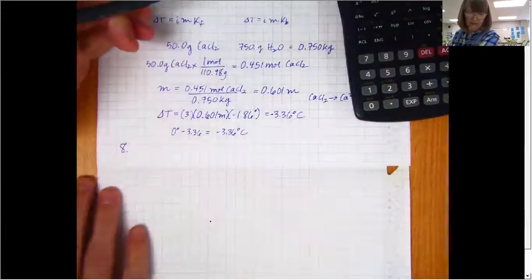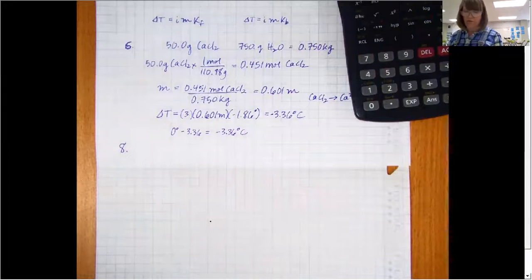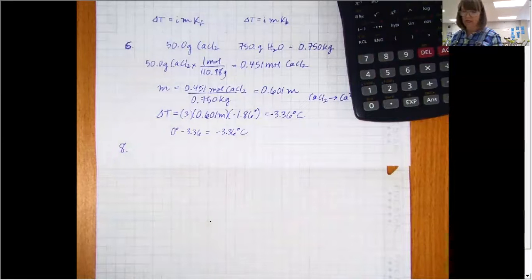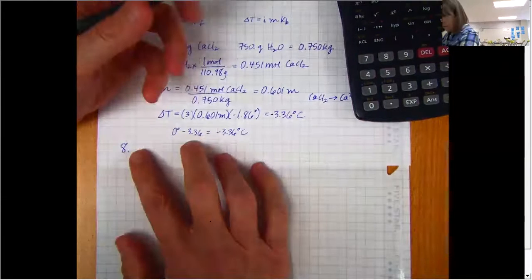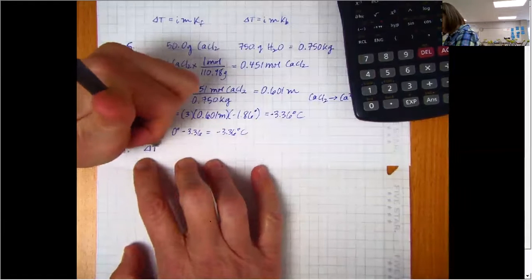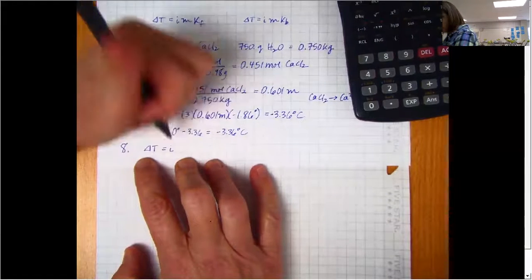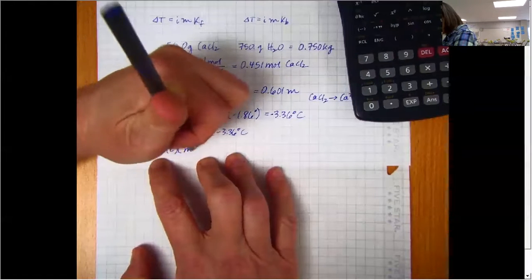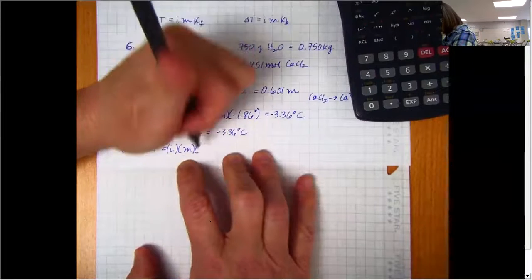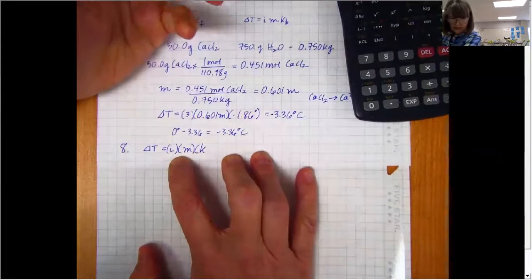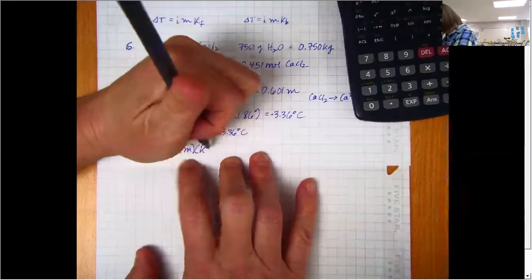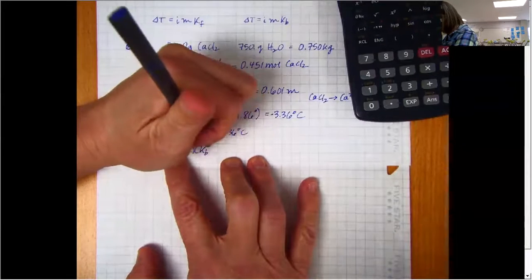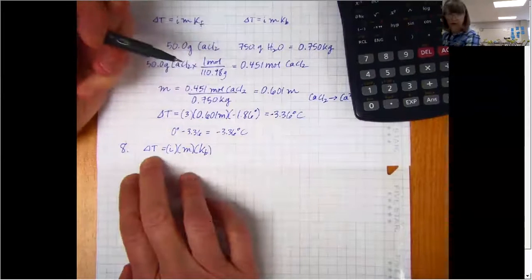Question eight says, a certain amount of NaCl is dissolved in 200 grams of water and its resulting boiling point is 101.5 degrees Celsius. How many moles and grams of sodium chloride were dissolved? So once again, we're using this formula, but except for we're using the boiling point constant. So let's see what information we already are given.